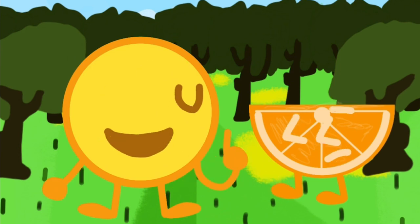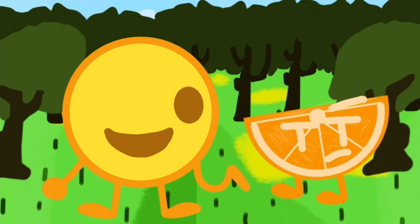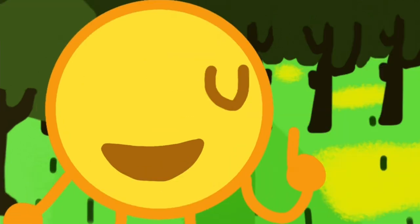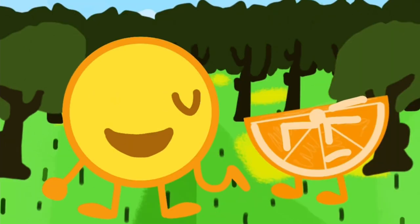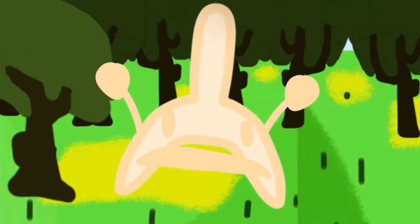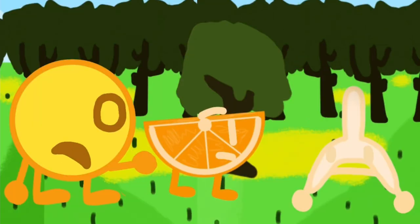An orange, also called sweet orange to distinguish it from the bitter orange Citrus aurantium, is the fruit of a tree in the family Rutaceae. Botanically, this is a hybrid of citrus— I'm a wishbone! You have interrupted my sentence, dear wishbone! I'm a wishbone!